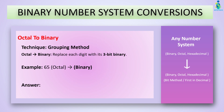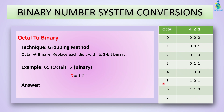Now let's convert from octal to binary. From octal to binary, we replace each digit with its three-bit binary equivalent. The digits are 5 and 6. The binary of 5 is 101 and the binary of 6 is 110, as you can see from the table. Combine both binaries — the answer will be 110101 in binary.